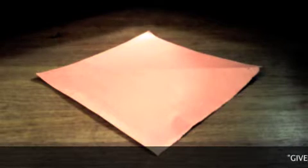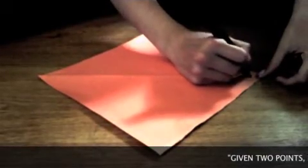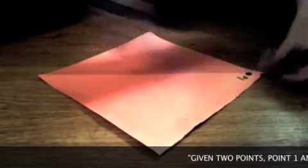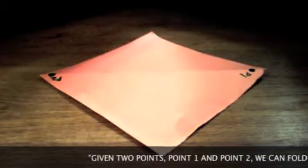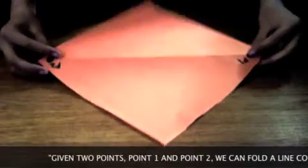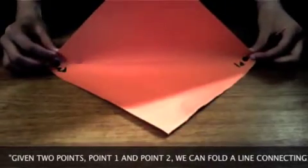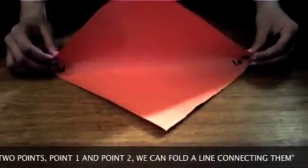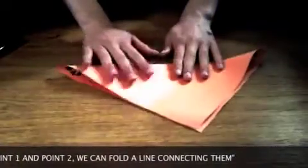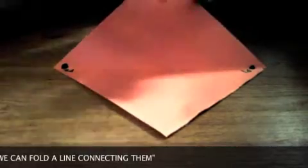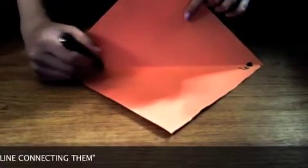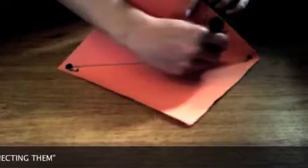Hamaki Huzita steps. First axiom states that if you are given point one and point two, therefore then you can make a fold connecting these two points. This fold connects point one to point two.